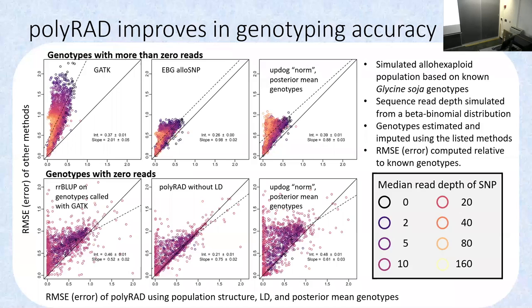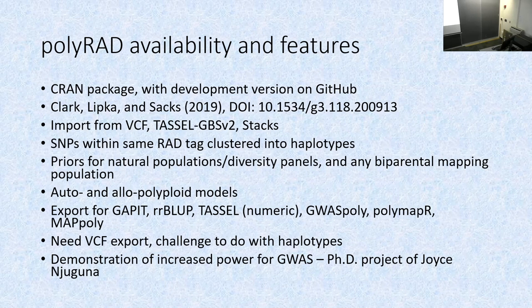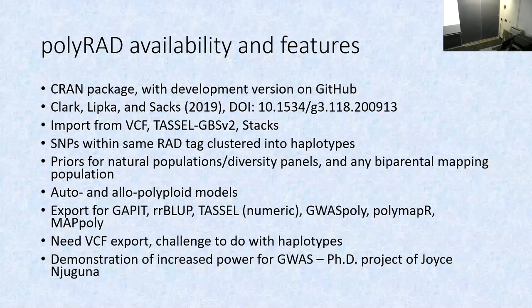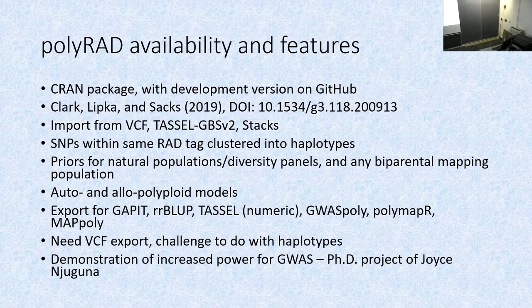PolyRAD is an R package available on CRAN and GitHub. It can import a variety of formats, work on both natural populations and mapping populations, and handle auto and allopolyploids. I have a PhD student working on a study demonstrating that with Bayesian genotype calling you're increasing power for GWAS — hopefully it'll show PolyRAD is the best, but I'm okay as long as it shows Bayesian methods are better than naive methods.